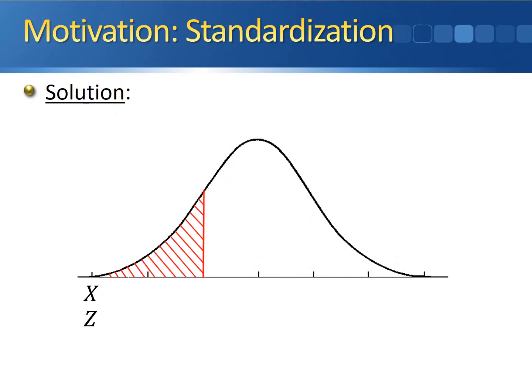Let's take a look at everything side by side to see how everything is connected. We started out wanting the probability that x is less than seven. X was the normal random variable denoting the number of days it takes for an invoice to be paid. The original distribution had a mean of ten, so it got centered at ten, with a standard deviation of three.